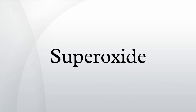A superoxide, also known by the obsolete name hyperoxide, is a compound that contains the superoxide anion with the chemical formula O2⁻. The systematic name of the anion is dioxide. Superoxide anion is particularly important as the product of the one-electron reduction of dioxygen O2, which occurs widely in nature.